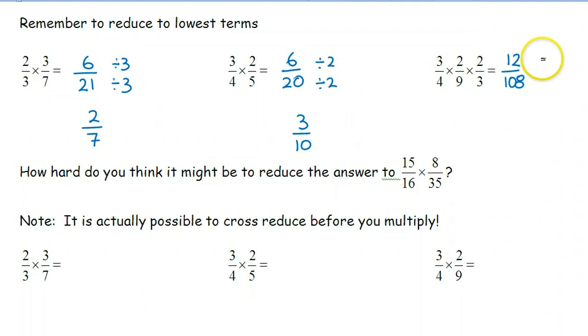Both of these numbers can be divided by twelve. To give the answer in lowest terms, one over nine.